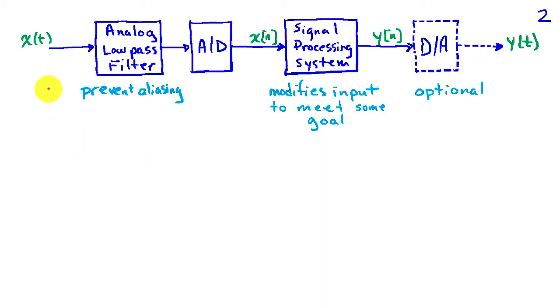Here we have a block diagram depicting an overall processing system where there's a continuous time signal x of t at the input, and then we sample that signal using an analog to digital converter to obtain a discrete time signal x of n. That signal is processed by a computing system that modifies the input x of n to meet some goal, and then the output y of n may be converted back to a continuous time signal, or it's possible that y of n itself is stored in digital form.